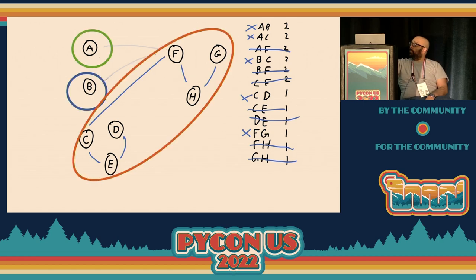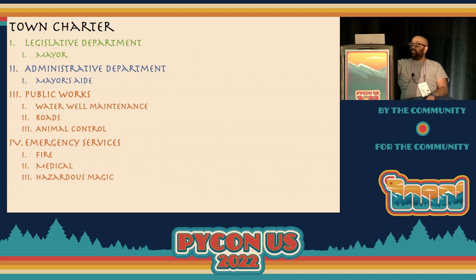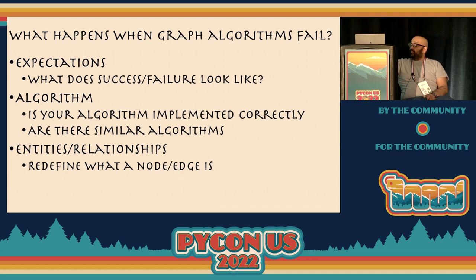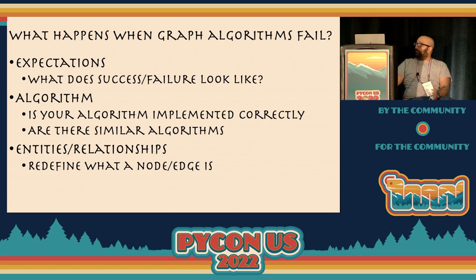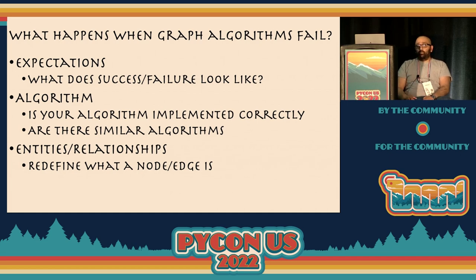You remove edges AF and BF and now you have three communities — ending up funding the mayor's office and the mayor's aide equally alongside water well maintenance, roads, animal crossing, fire, medical, and hazardous magic. But graphs are not a silver bullet. Your algorithms only work the way they're supposed to, so always ask yourself what results you expect before running any algorithm. If you don't get what you expected, check the implementation, try similar algorithms, or redefine what a node or edge is — because an arbitrary relationship like being in the same paragraph of a charter may not encode useful information.